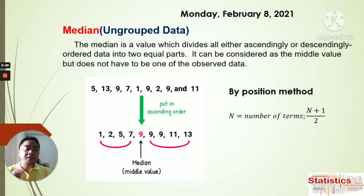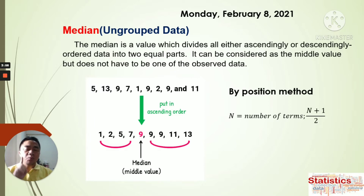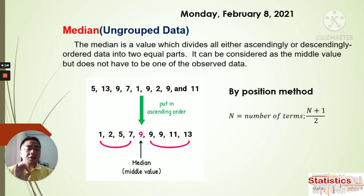If the number of data is even — like 8, 10, 12, 14 — there will be two middle values, and you need to get the average of those two. But if the number of data is odd — like 7, 9, 11, 13 — there will be only one middle value. The other method is the position method, which is useful when there are many data values and counting manually is difficult. We still need to arrange from lowest to highest.